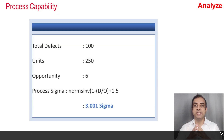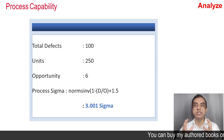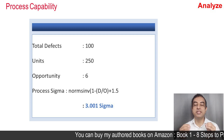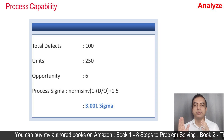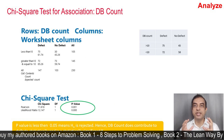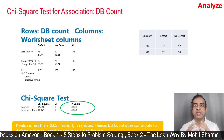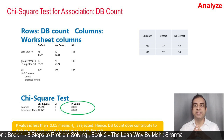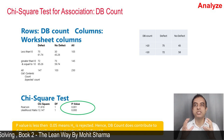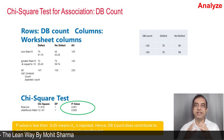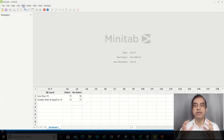Next, the team moved to the Analyze phase and the first step was to check process capability. The sigma value was at 3.01 sigma. We can use this formula in Excel to check process capability: it is NORM.S.INV(1 minus defects divided by total opportunities) plus 1.5. Then the team tested all the potential X's with the help of a chi-square test. Wherever the p-value was less than 0.05, that X was considered statistically significant. Wherever the DB count on a server was less than 10, it was considered a defect and further analysis was done to identify a possible solution.